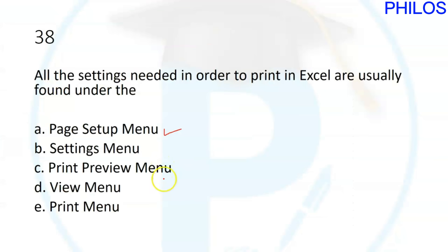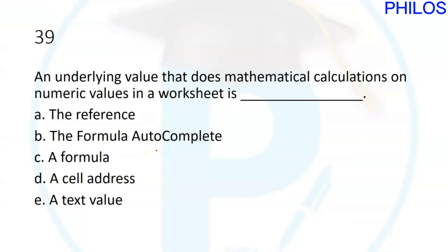Question thirty-nine: blank is a value that does mathematical calculations on numeric values in a worksheet. The correct answer is A: formula. A formula does mathematical calculations on numeric values in a worksheet.